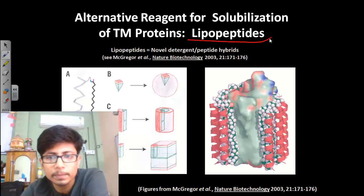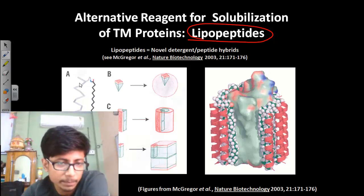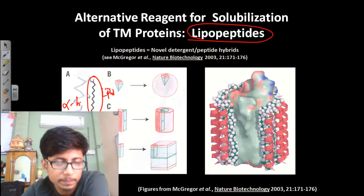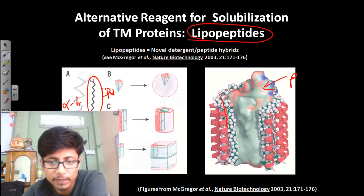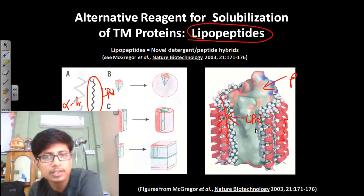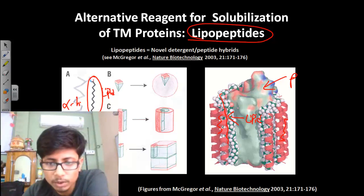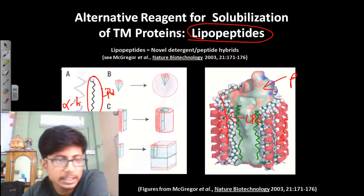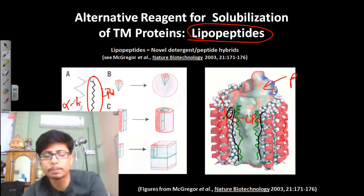Another way is using lipopeptides — a lipid-like structure attached with a peptide, where the alpha helix is the peptide component and lipids are attached at both terminals. The target protein has alpha helix segments, and the lipid molecule (which is hydrophobic) interacts with the hydrophobic region of the protein. Peptides surround the outside, creating a package-like structure with an ultimately hydrophilic region outside, allowing the protein to be taken out.